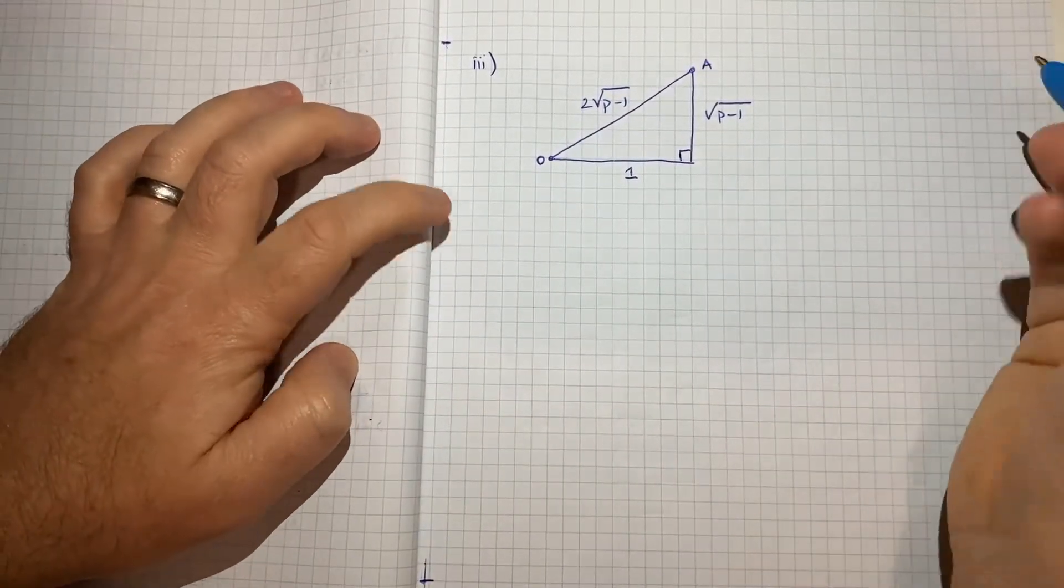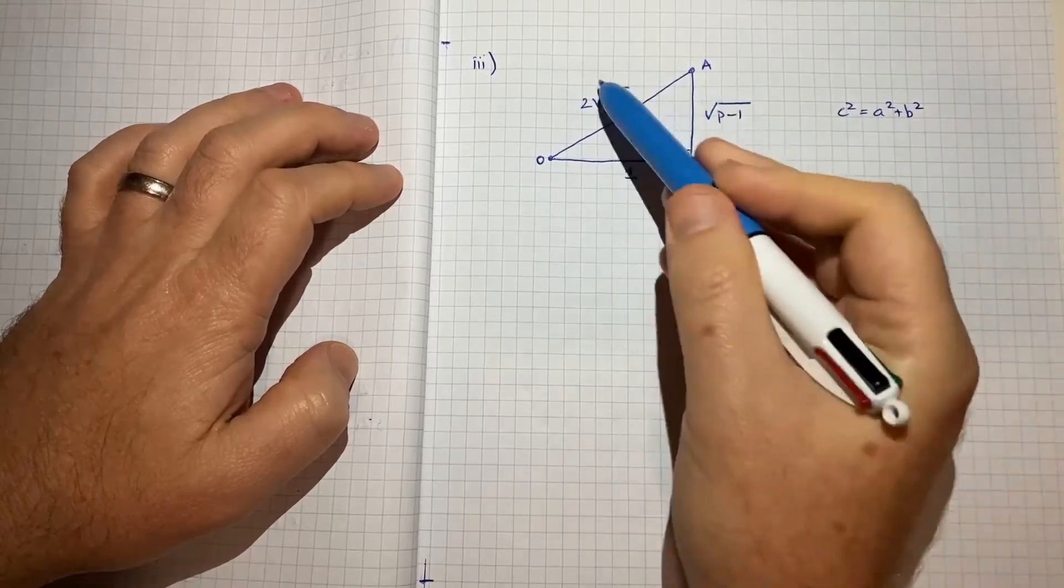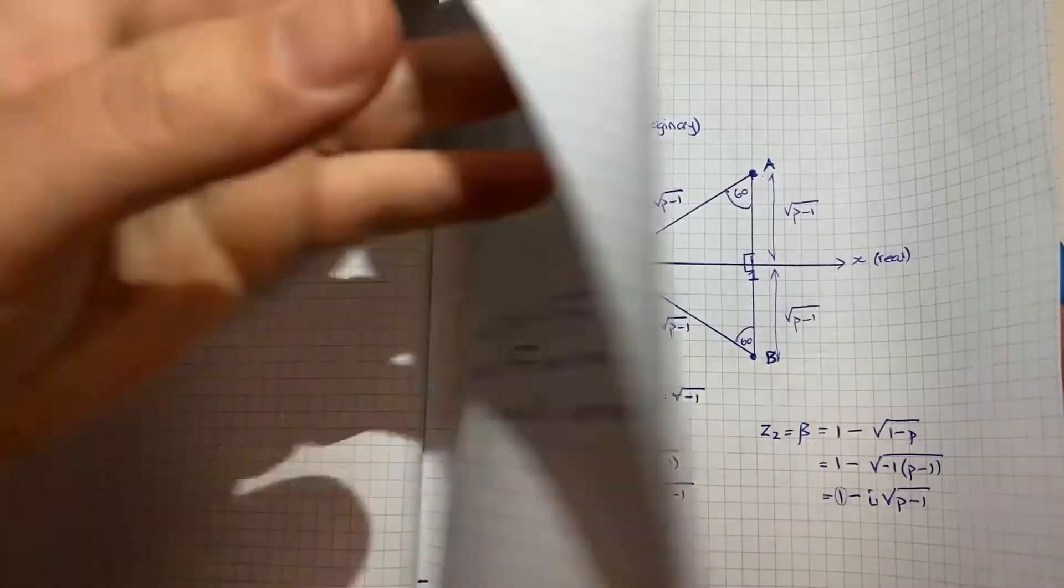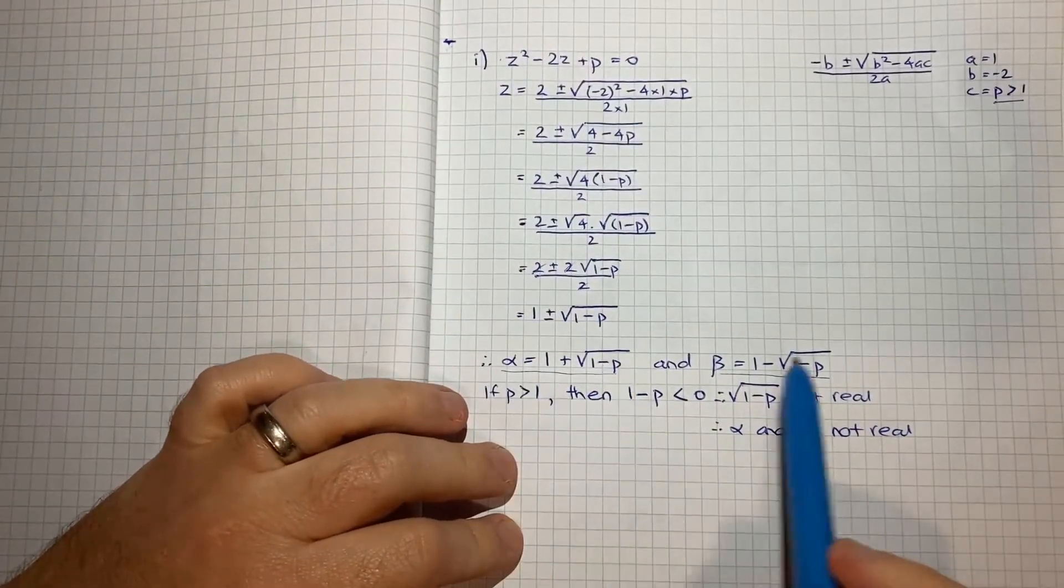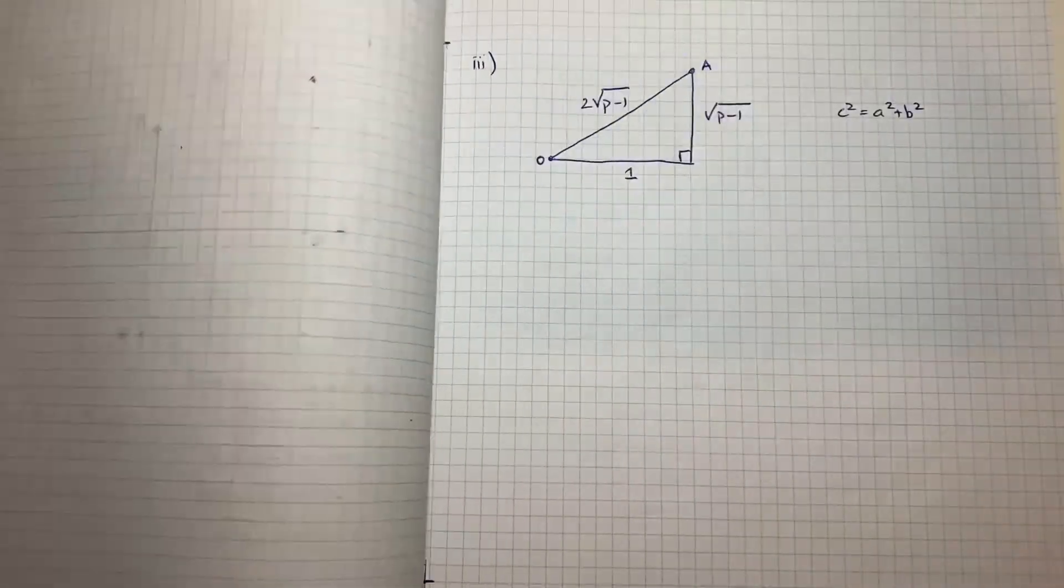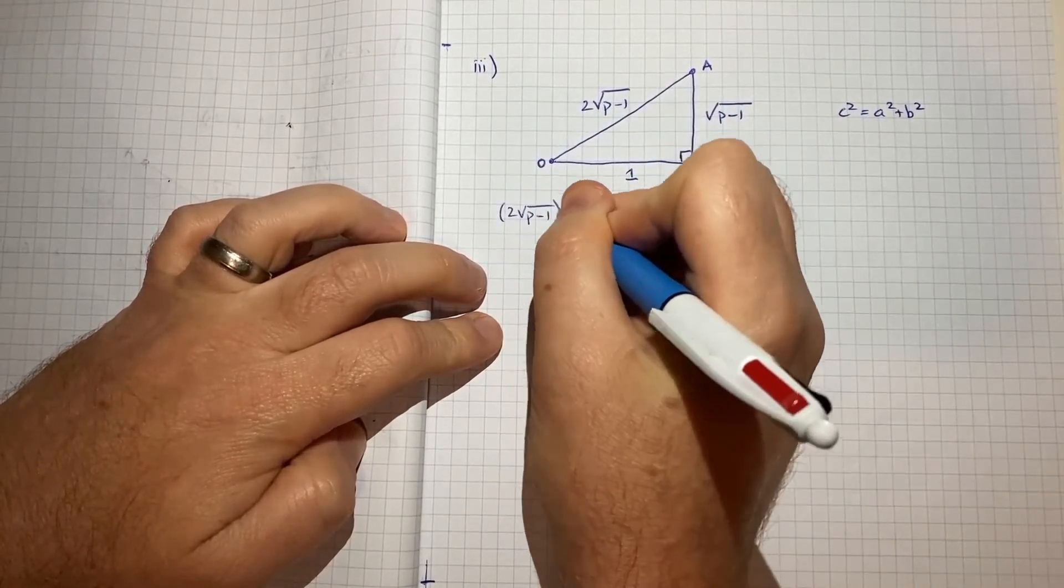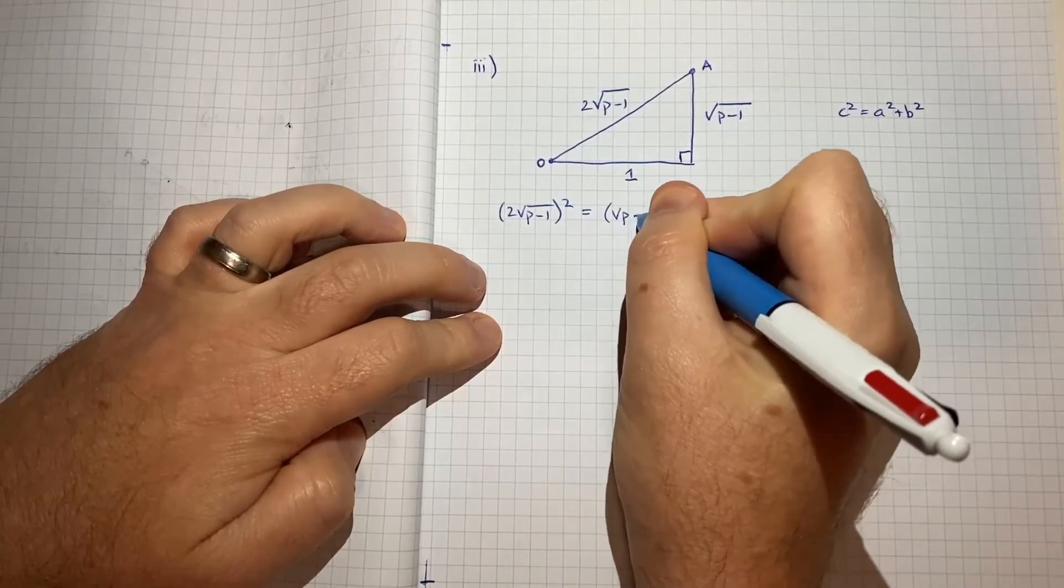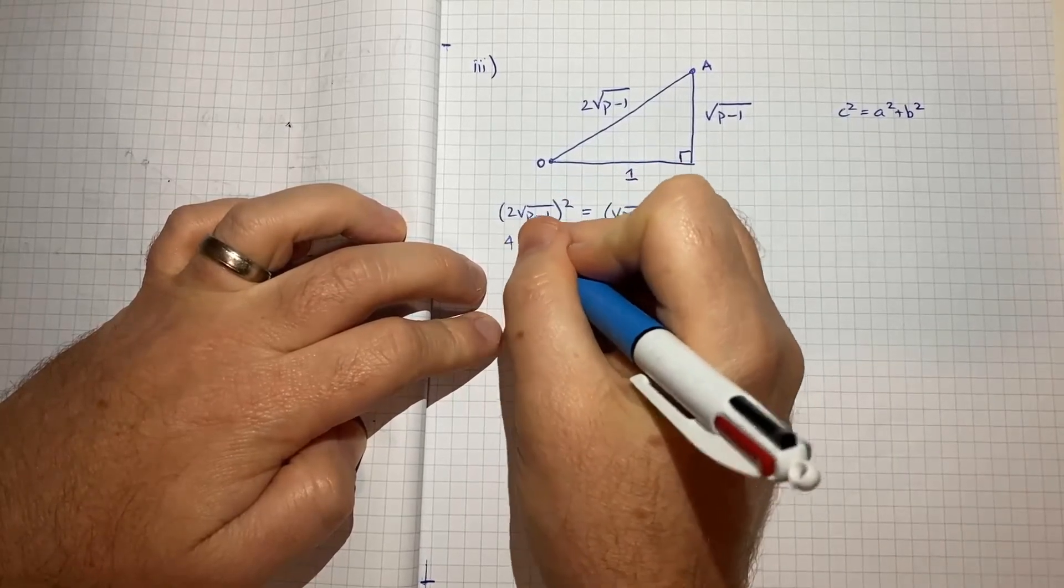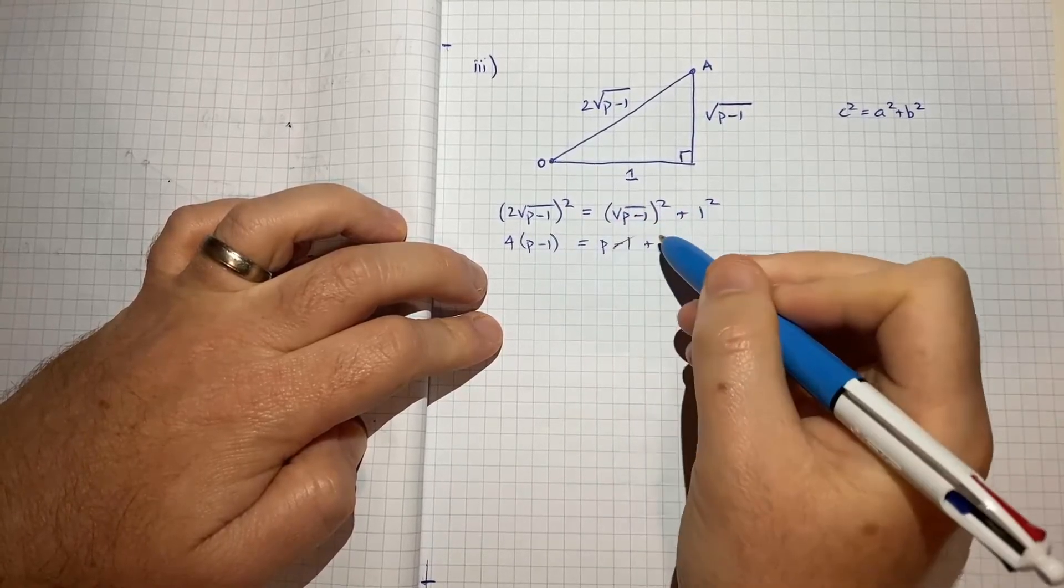And now using good old Pythagoras, C squared equals A squared plus B squared, I think we're going to have enough to solve for P. And once we've got P, if we come back to our alpha and beta, notice P is the only thing we need to then have alpha and beta. So let's just do this. So we'll get 2 root P minus 1 squared is equal to root P minus 1 squared plus 1 squared. So we'll get 4P minus 1 is equal to P minus 1 plus 1. So we can cancel those.